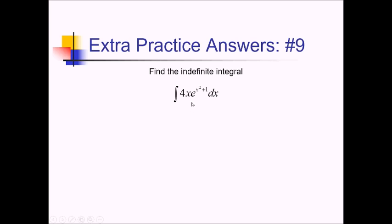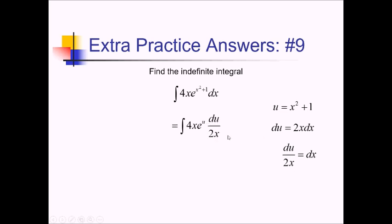For this problem, since I noticed an inner function — x squared plus 1 — and its derivative, something with an x, elsewhere in the problem, I'll try substitution. Let u equal x squared plus 1. Then du equals 2x dx, so dx equals du over 2x. Substituting back into the original, we have 4x times e to the u, and dx becomes du over 2x. The x's cancel and 4 over 2 gives us 2. So we have 2e to the u du. The anti-derivative is 2e to the u plus c. Replacing u with x squared plus 1 gives the final answer.